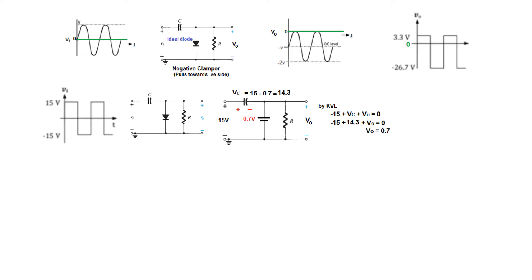Applying KVL to find the output using this loop: minus 15 plus Vc plus V0 equals 0. With Vc equal to 14.3 volts, the output V0 works out to 0.7 volts.